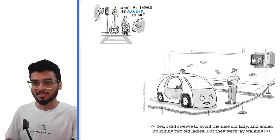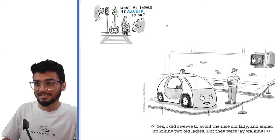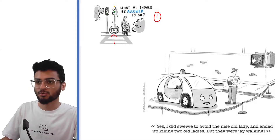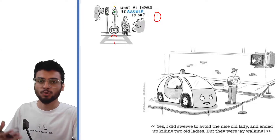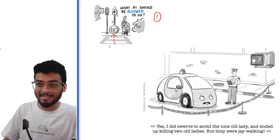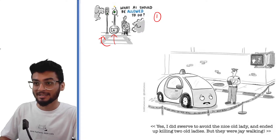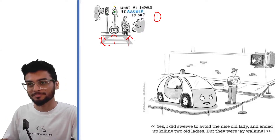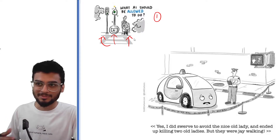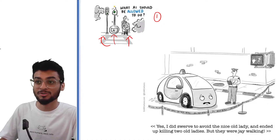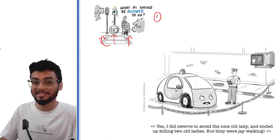Looking at these two pictures, let's try to discuss what's happening here. In the first picture there is an AI and there are two old people standing on the side of the road — they want to cross the road. This AI turned the light green because it has certain capabilities to do so, in order to help these older people cross the road. It's a good intention on the part of the AI.